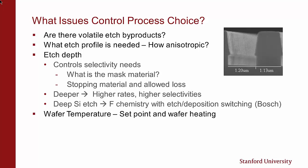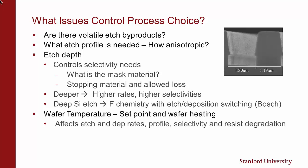Another issue is wafer temperature. We have control — we can set the temperature in the reactor, and we also have wafer heating depending on process conditions, how much source power we have and bias power. Temperature affects the etch and deposition rates; it affects profile, selectivity, and it can affect resist degradation. If the resist gets too hot, it can degrade and be very difficult to remove, and can actually affect the profile as we're going deeper.